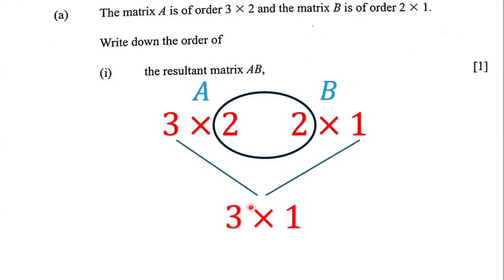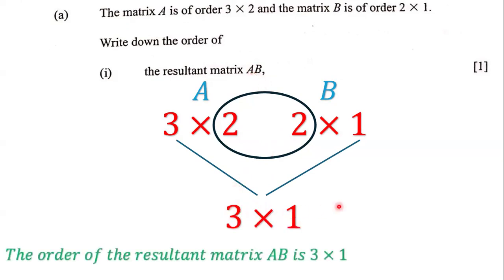And so, the order of the resultant matrix A times B is 3 by 1.